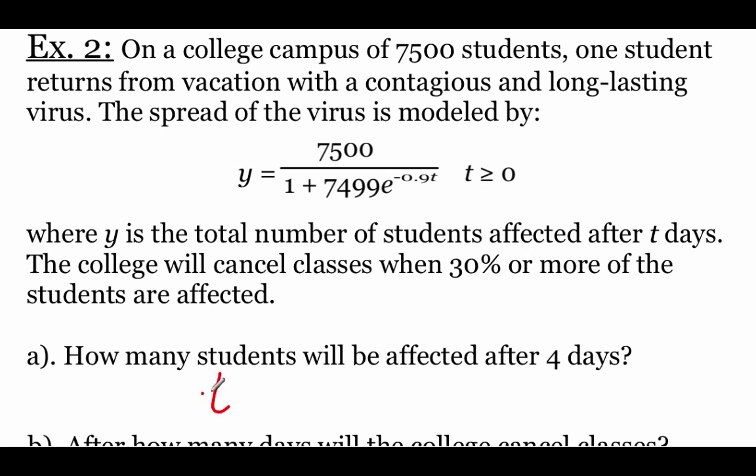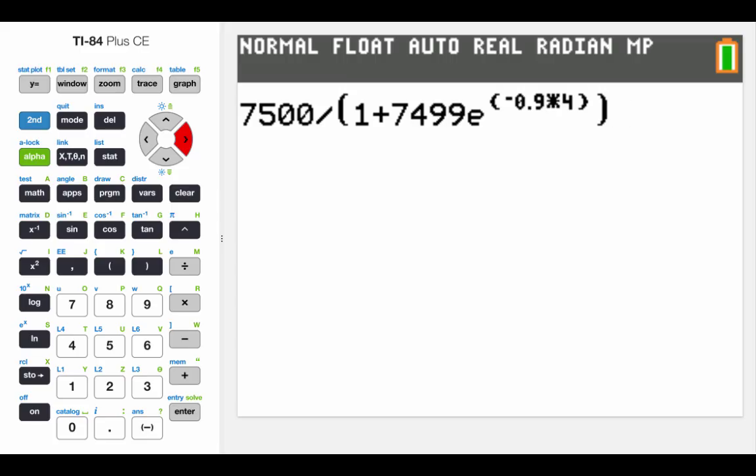So what this means is we're going to have a t value of 4, and we're just going to plug that into our equation. Now I've already got everything typed into my calculator. Be careful where you're putting the parentheses when you type this stuff in, just to make sure that our calculator is doing the order of operations in the order that we actually want it to. If we hit enter, we get about 36. So we could say after four days, there's roughly 36 students that are affected by this virus.